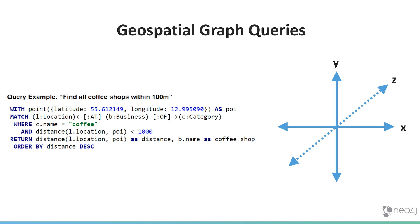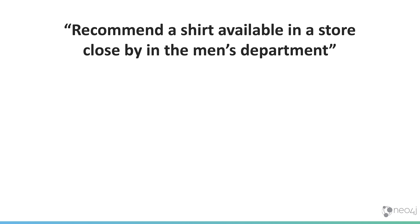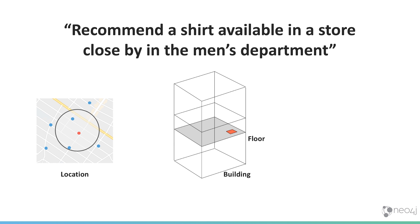We've also added support so that you can run your queries in three dimensions. How you might use this is totally up to you, but think about a query like: recommend a shirt available in a store close by in the men's department. We can take your location and find the different stores, and then once you're in a particular store, you can use that third dimension support — the Z-axis — to find the particular floor and rack that that shirt is available in.